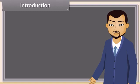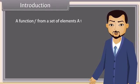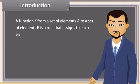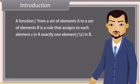Before we define the inverse trigonometric functions, we need to think about exactly what we mean by a function. A function f from a set of elements A to a set of elements B is a rule that assigns to each element x in A exactly one element f of x in B.